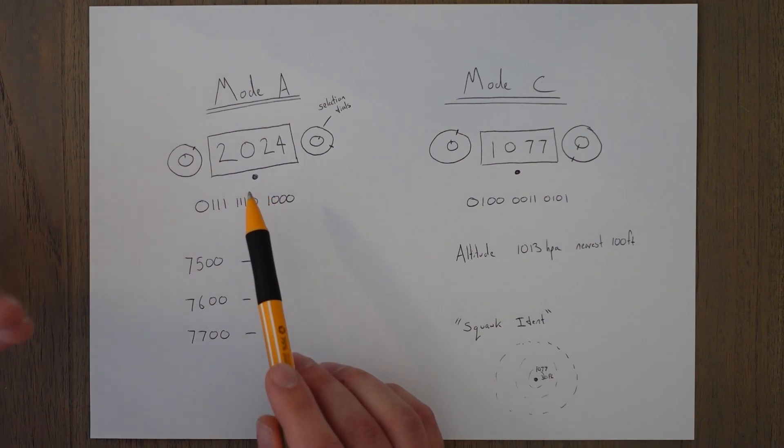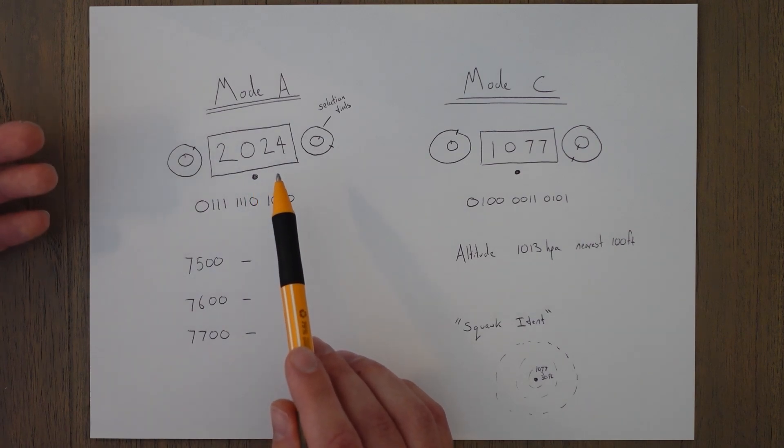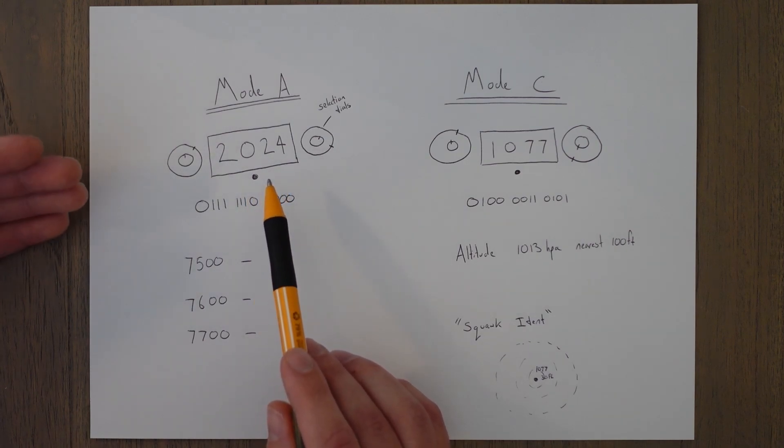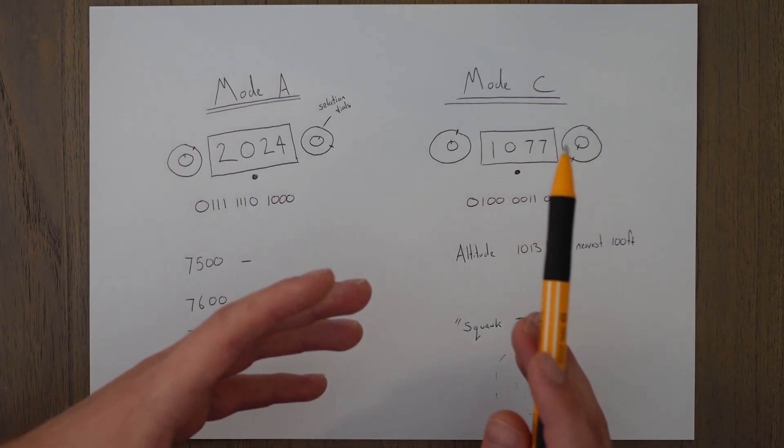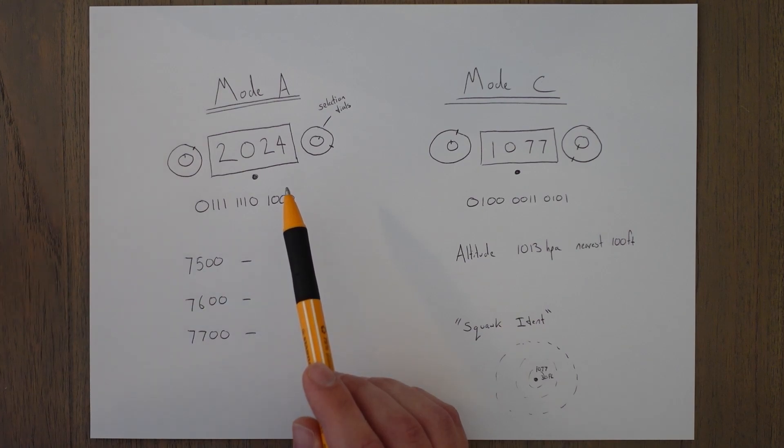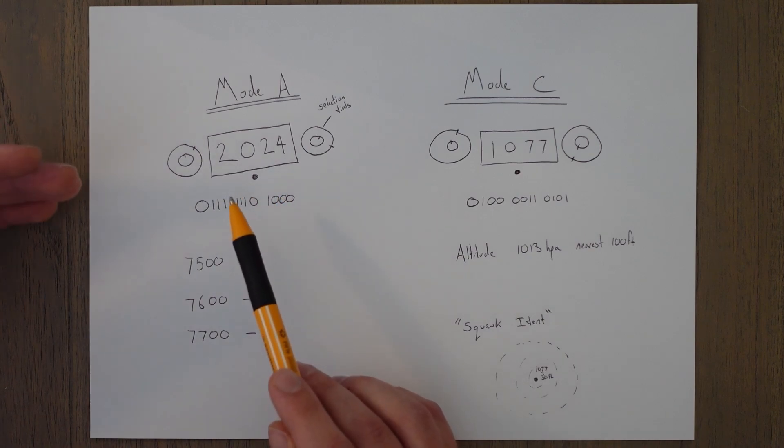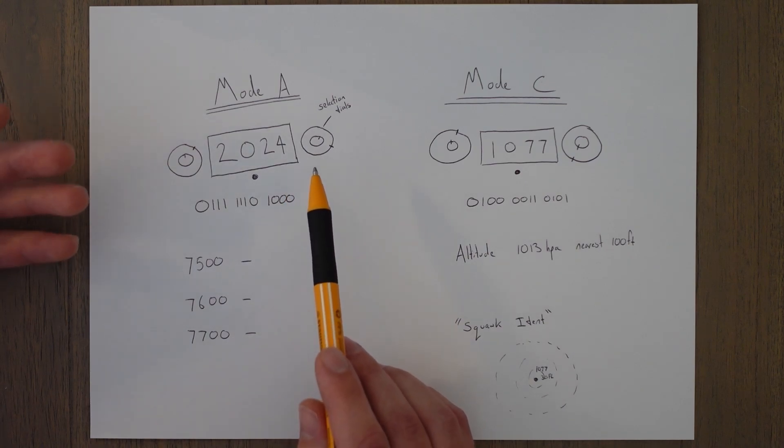This transponder code is called a squawk code and it is usually given with a departure clearance or when leaving an airport. This way air traffic control know who they are looking at on their displays as you fly off, and that information can be handed along to the next air traffic control area along with any other relevant details like aircraft type, people on board, etc. There are a few unique squawk codes that are set by the pilots without instruction from air traffic control. These are not assigned codes but they are used when we're in some sort of bad situation.